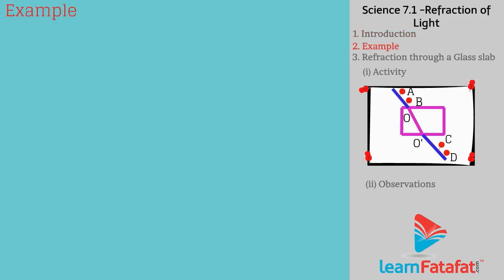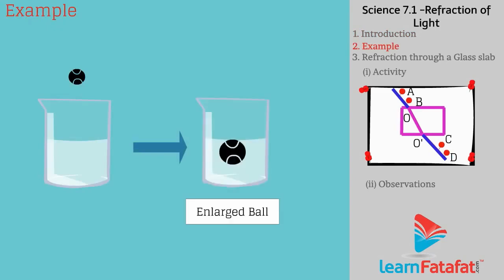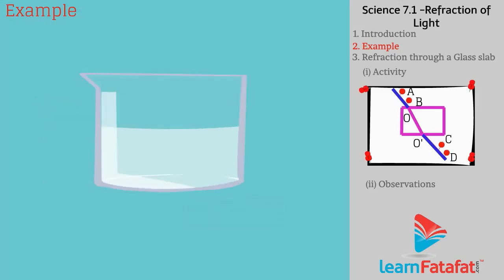Example. Heavy rubber ball when kept in water then it looks like enlarged. Similarly, if a pencil is placed half immersed in water then it appears to be bent. Also, its size is enlarged.